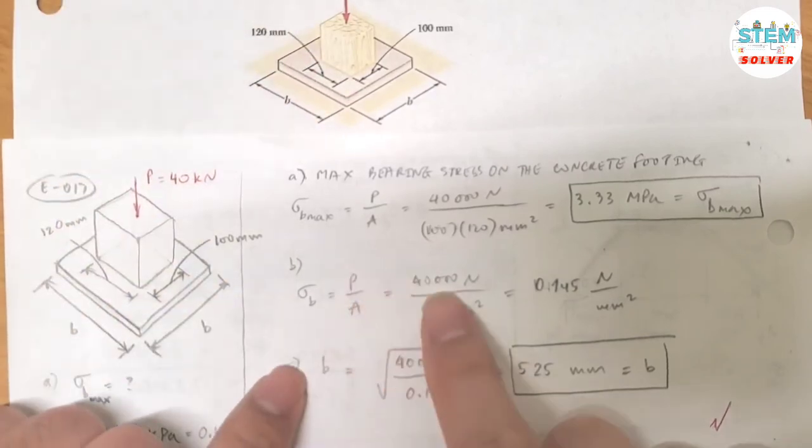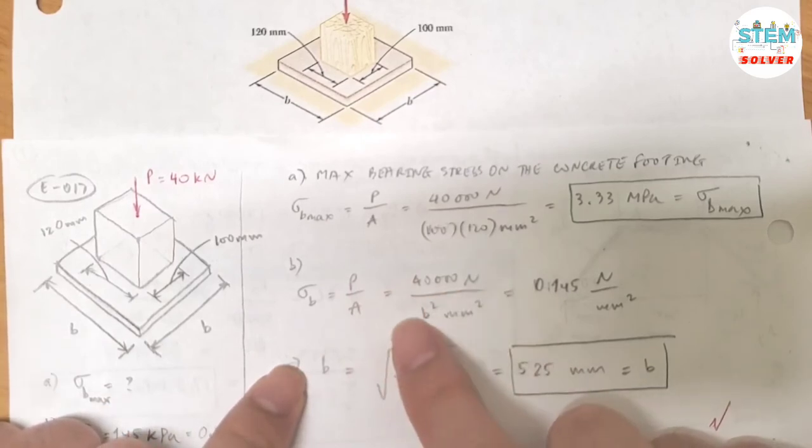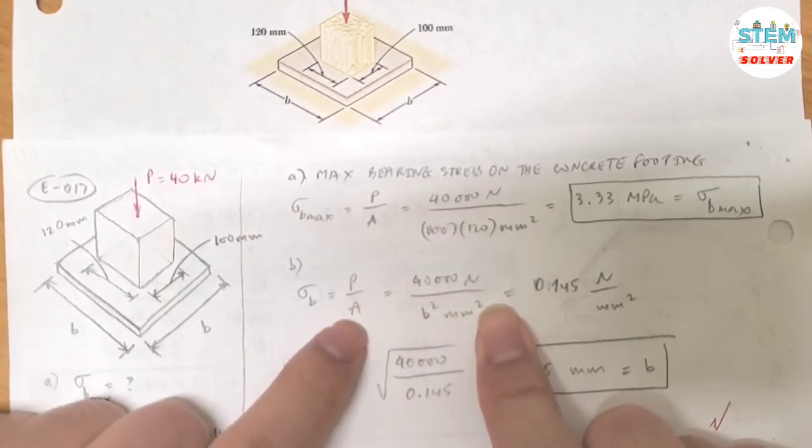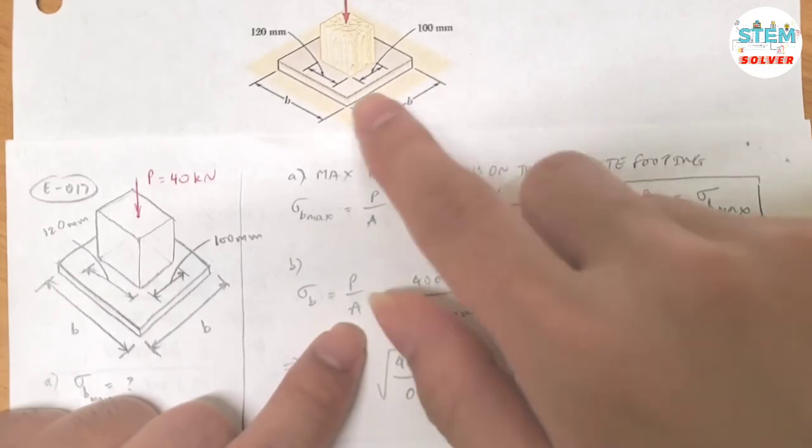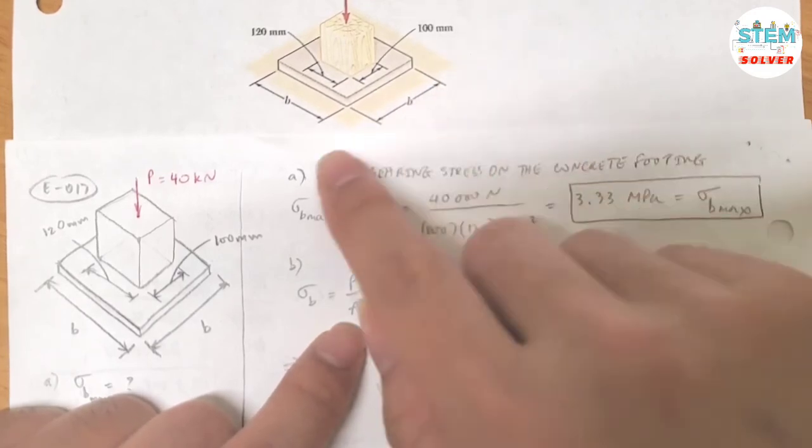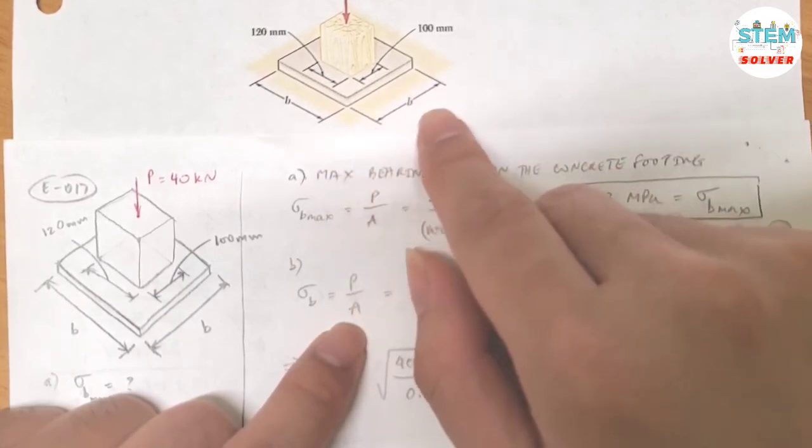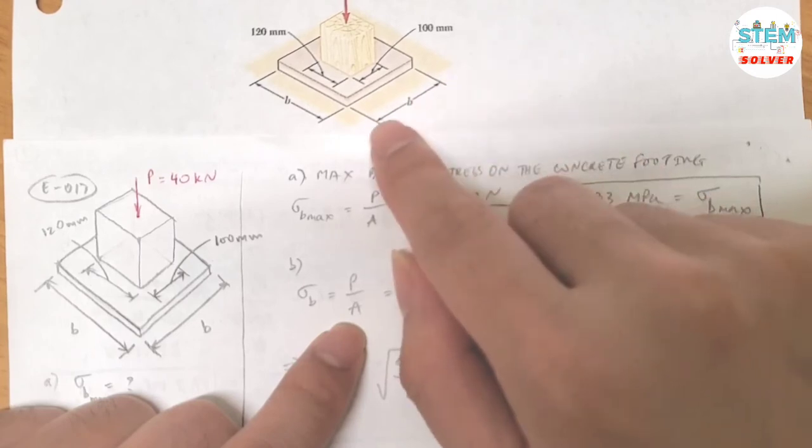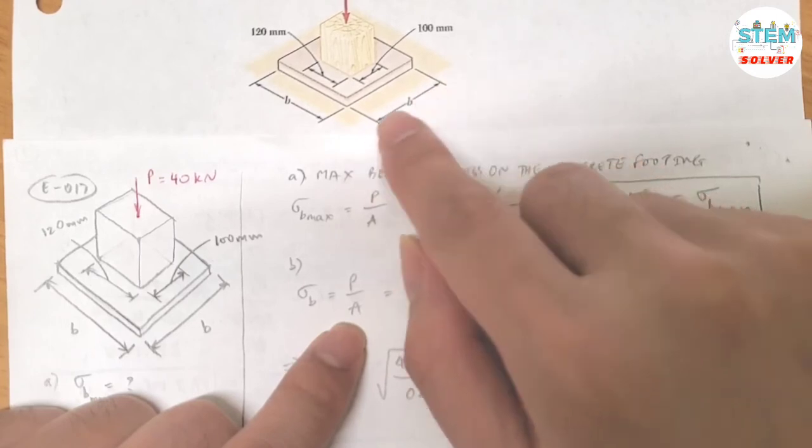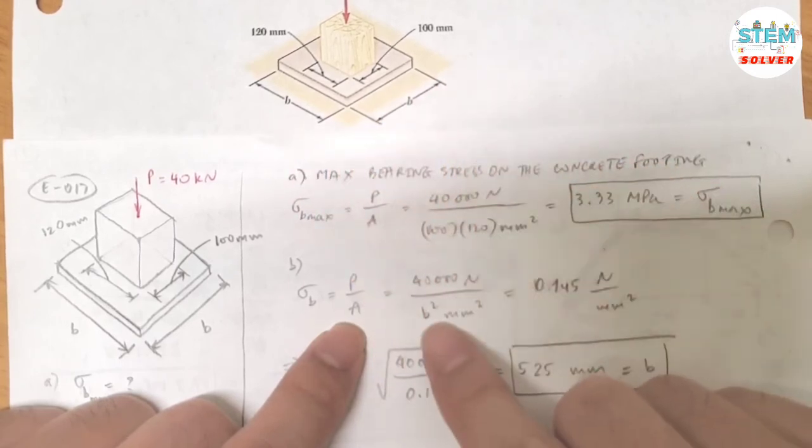So we also have 40,000 N divided by... Now for the area, it is different for the concrete. So the area for this one is width times length times width, and we have the same, so we have B times B, which is B squared.